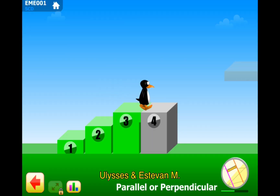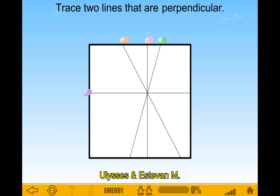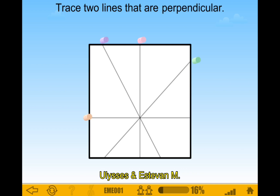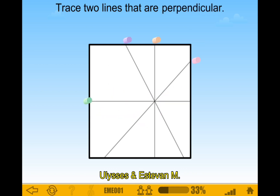Level four. Trace two lines that are perpendicular. So we gotta find two lines that are perpendicular. Oh, this one. There. Oh wait, it's just that. Okay, so I just went perpendicular. A lot of these are perpendicular. There we go. Perpendicular. Perpendicular. Now this perpendicular is easy.